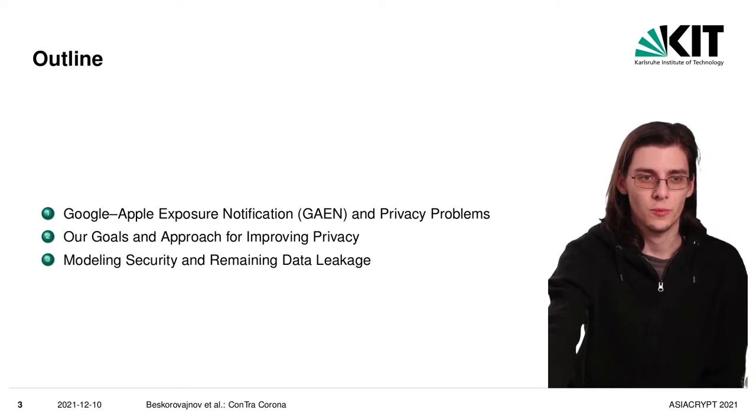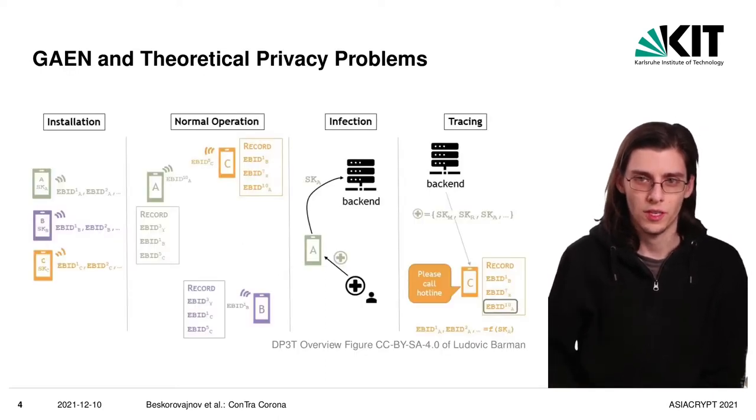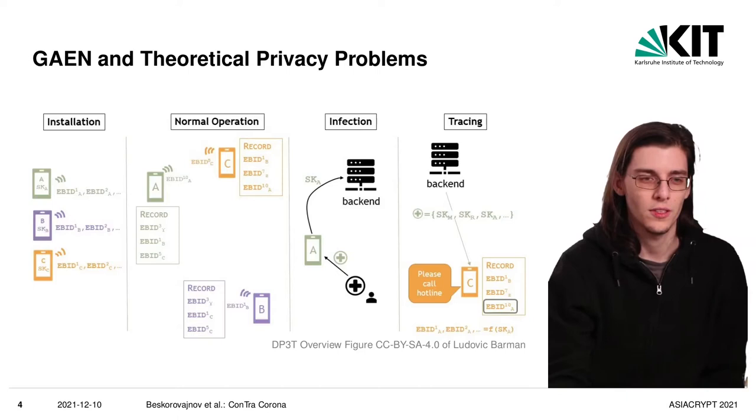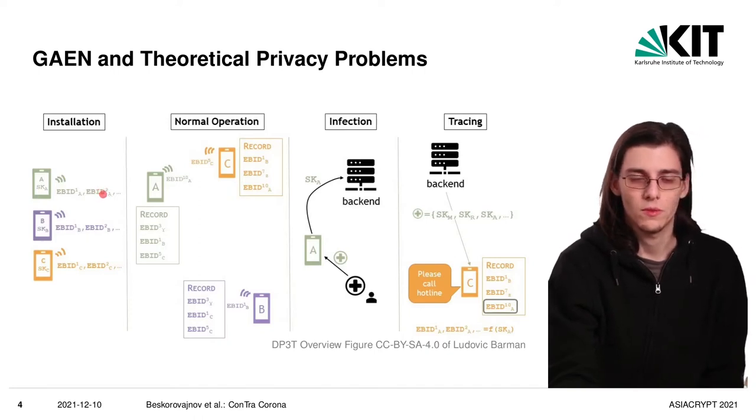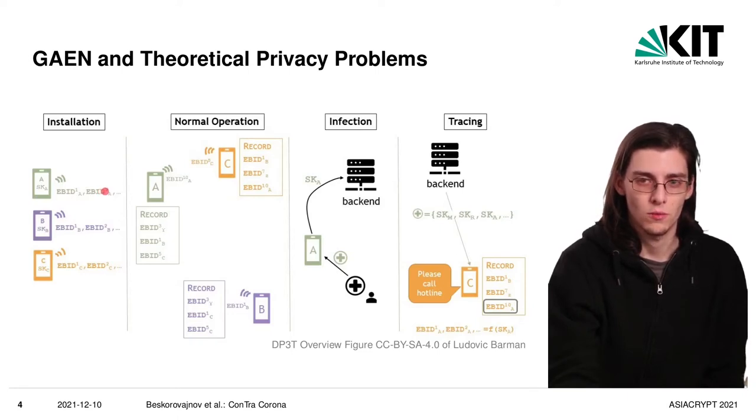First a bit about the Google-Apple exposure notification framework and how it would work geographically. When a user installs the app, the app draws a random key once per day which it uses to derive short-term keys that are broadcasted and switched every about 15 minutes.